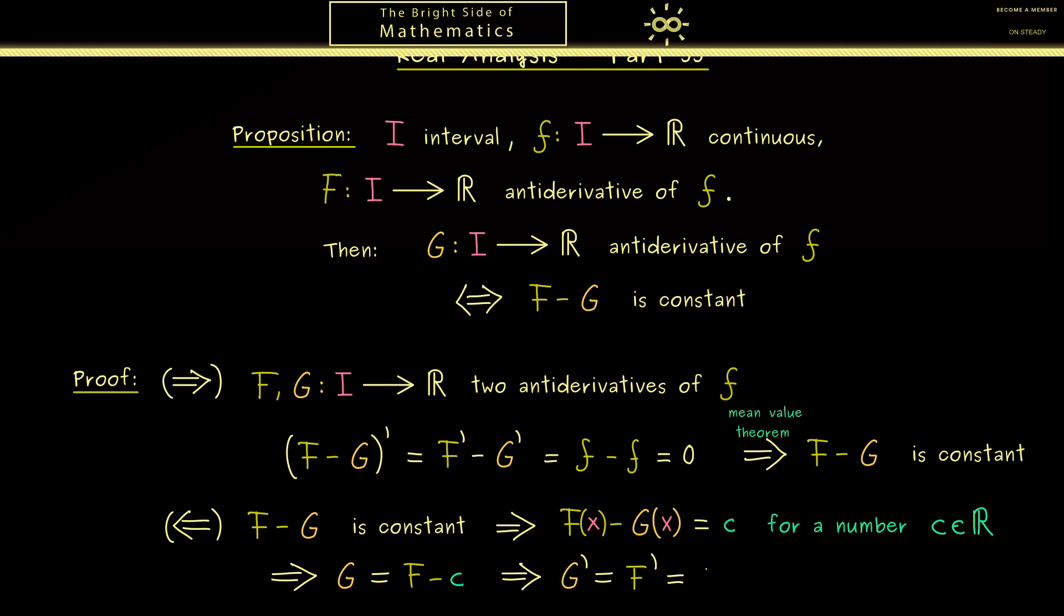So it just remains that F' is equal to lowercase f, simply because it's an antiderivative of f. However, this also means that G is an antiderivative of f. And please don't forget this is exactly what we wanted to show here. So in summary, the whole proof is finished and we have this nice result here.